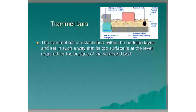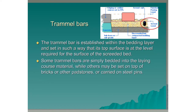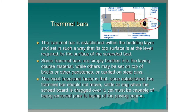The trammel bar is established within the bedding layer and set in such a way that its top surface is at the level required for the surface of the screeded bed. Some trammel bars are simply bedded into the laying course material — that is, bedded directly into the grit sand — while others may be set up on top of bricks or pad stones or carried on steel pins. The most important factor is that once established, the trammel bar should not move, settle or sag when the screeder board is dragged over it, yet must be capable of being removed prior to laying of the paving course.